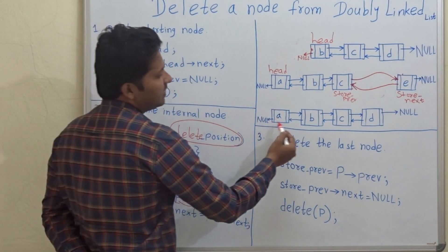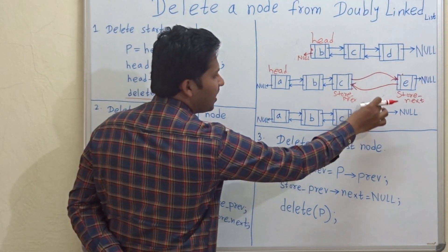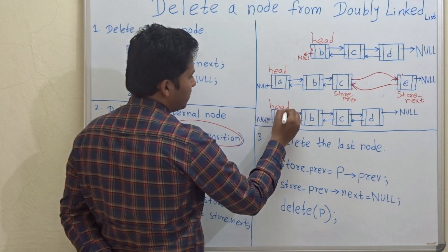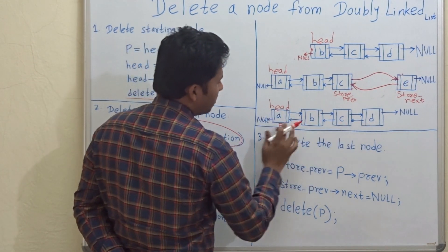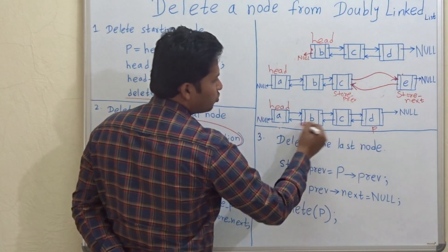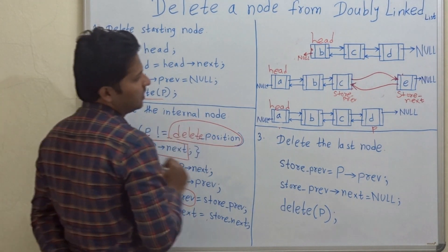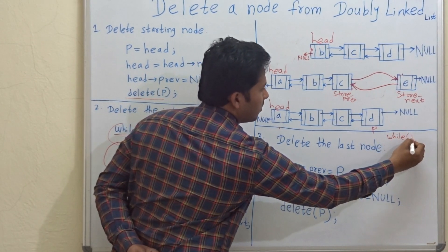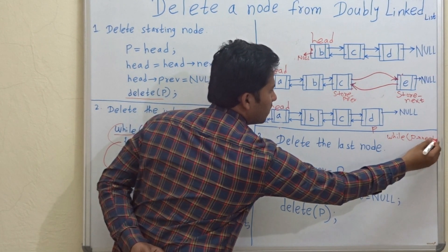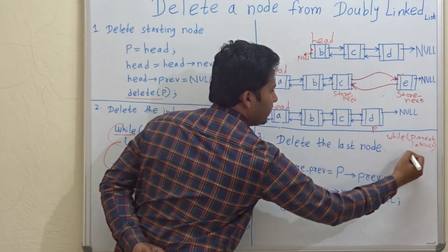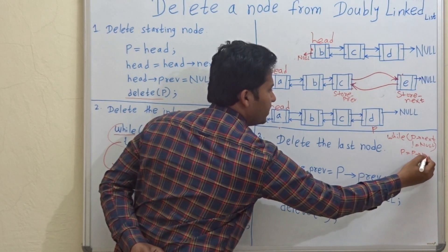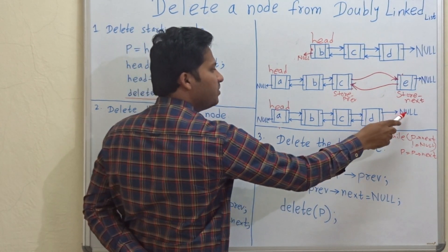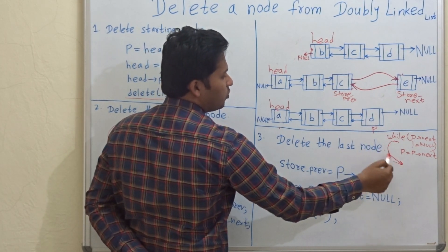Now here is the third case — we have to delete the last node. If p is pointing here and this is the head of this linked list, p should reach the last node. We use a while loop: while p->next is not equal to null, p equals p->next. When p->next is null we stop and come out of the while loop, meaning p is now at the last node.